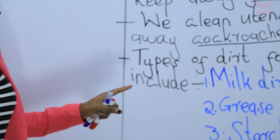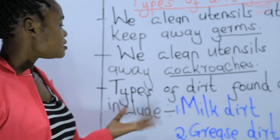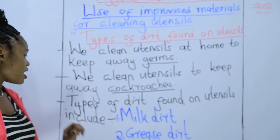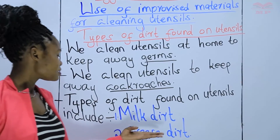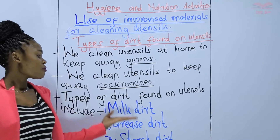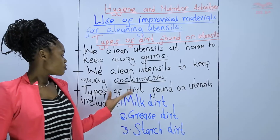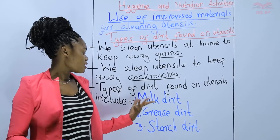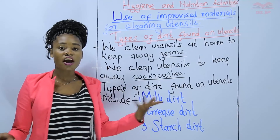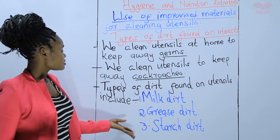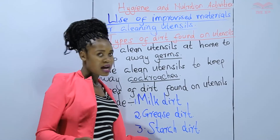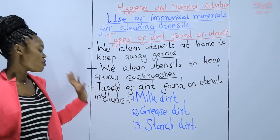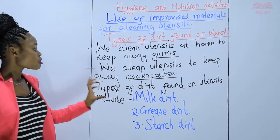So, these are the main three types of dirt found on utensils. The first one is milk dirt — when we have used a utensil to serve milky foods. Then, grease dirt is the remains of oily foods like fish, fried eggs, or meat. And lastly, starch dirt. These are the main types of dirt that are found on utensils at home.